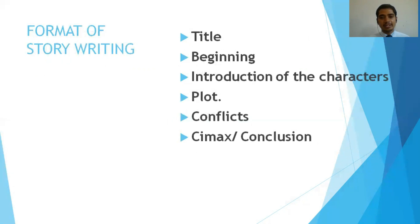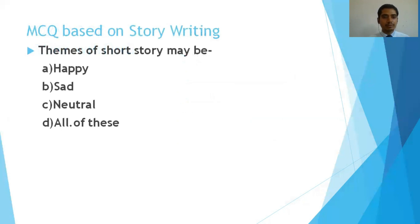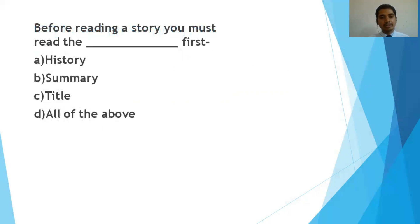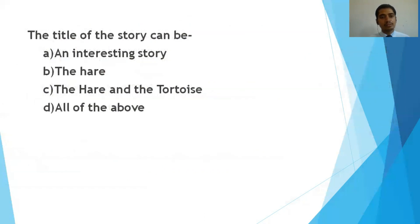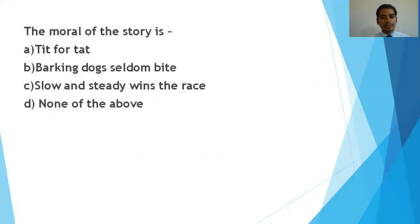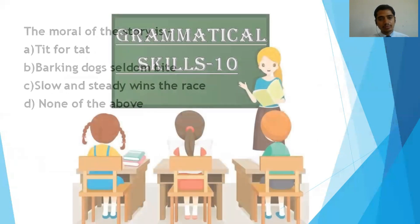For story writing, the components are title, beginning, introduction, plot, conflict, and conclusion. An MCQ example: 'The themes of the story may be happy, sad, neutral, or all of these' — the answer is all of these. Another question: 'Before reading a story, you must read the dash first' — with options history, summary, title, or all of the above — the correct answer is title. You might also get a story with blanks to fill in. An important question that will definitely be there is the moral of the story, and you have to choose it from the options given.